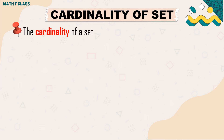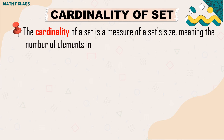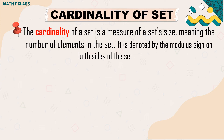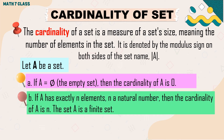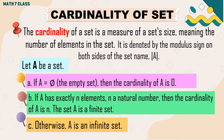Next, we're going to discuss cardinality of a set. The cardinality of a set is a measure of a set's size, meaning the number of elements in the set. It is denoted by the modulus sign on both sides of the set name. If A is a null or empty set, then the cardinality of set A is zero. If A has exactly n elements, a natural number or counting number, then the cardinality of A is n, and the set A is a finite set. Otherwise, A is an infinite set.